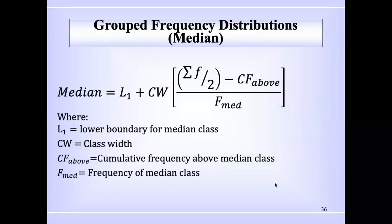CF above, the cumulative frequency above, is just the cumulative frequency in the row above the median class. So just looking at the table, the row that's above the median class, it's the cumulative frequency in that row. And F_med, the frequency of the median class, well that is self-explanatory.